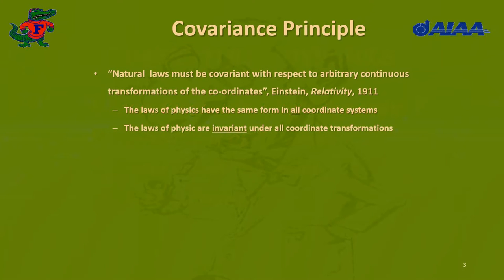The core of Einstein's relativity is the covariance principle. Let's read how he stated it in a publication from 1911: 'Natural laws must be co-variant with respect to arbitrary continuous transformations of the coordinates.' This really means that the laws of physics have the same form in all coordinate systems — another way to express this is that the laws of physics are invariant, that is co-variant, under all coordinate transformations.